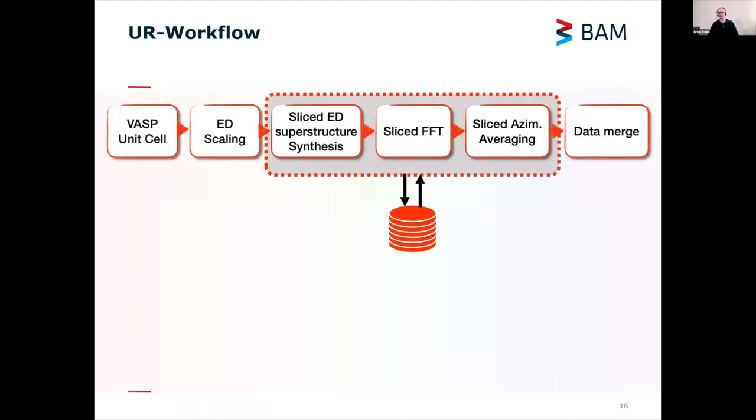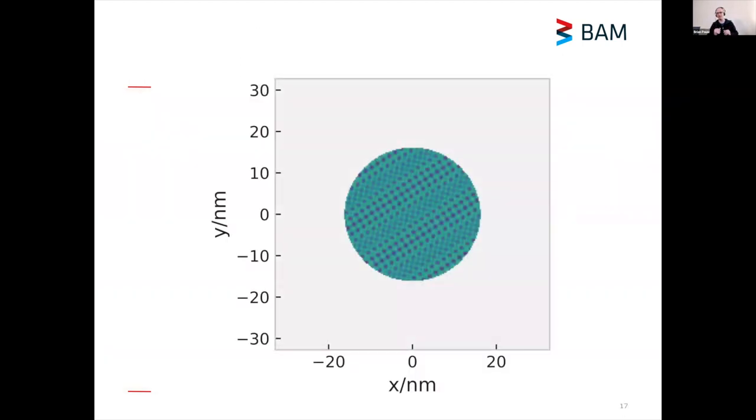That's what we did as a proof of principle. I asked a colleague to calculate a VASP unit cell for a metal organic framework using VASP. I then scaled it down a little bit, sliced this electron density, tiled the electron density, rotated it as well, and sliced it so that I had a large electron density map. Then I could Fourier transform this in slices, then I could azimuthally average this in slices, and then bring all of those gigabytes of data, hundreds of gigabytes of data, down into a single curve, a single one-dimensional curve. It does waste some resources.